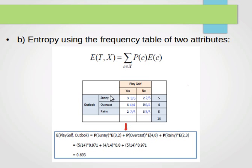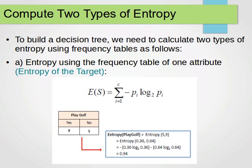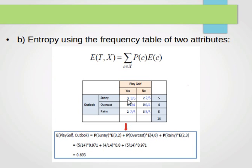We compute the entropy for all categories of the variable Outlook. Entropy of play golf given Outlook equals probability of sunny (5 over 14) times entropy of 3 and 2, plus probability of overcast (4 over 14) with class probabilities 1 and 0 since all are yes, plus probability of rainy (5 over 14) with class probabilities 2 over 5 and 3 over 5. We plug the values into the summation for both yes and no and compute the entropy after splitting.